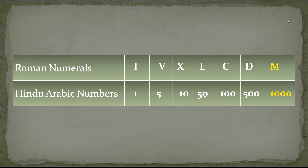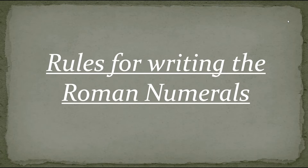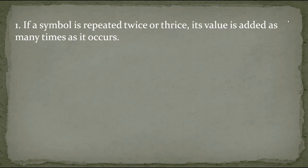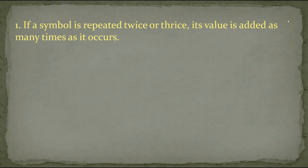Now let's understand the rules for writing Roman numerals. The first rule says that if a symbol is repeated twice or thrice, its value is added as many times as it occurs. So if you write those symbols twice or thrice, the value of that symbol gets added that many times. Let's understand this rule by example.